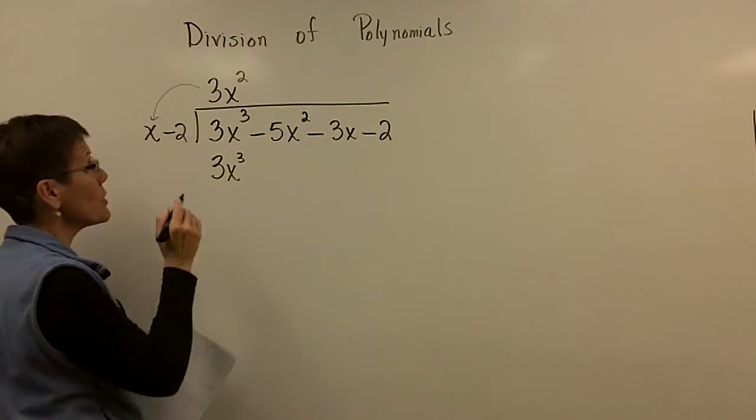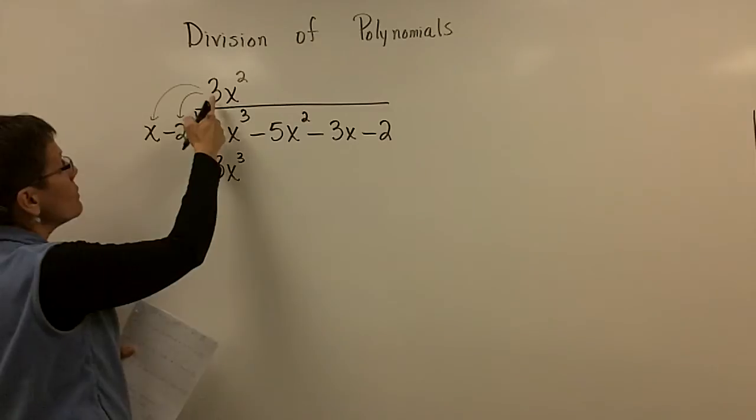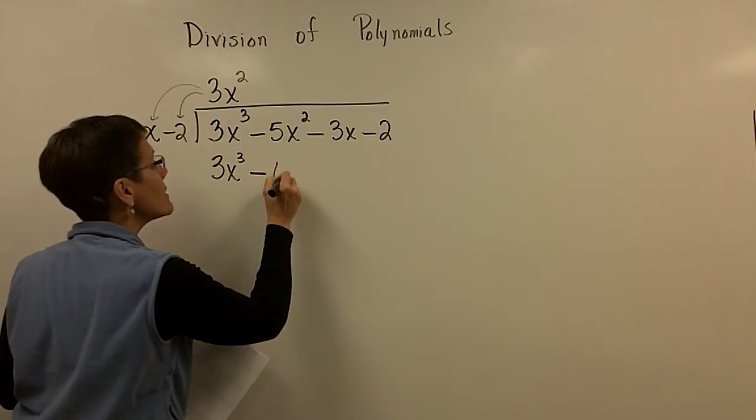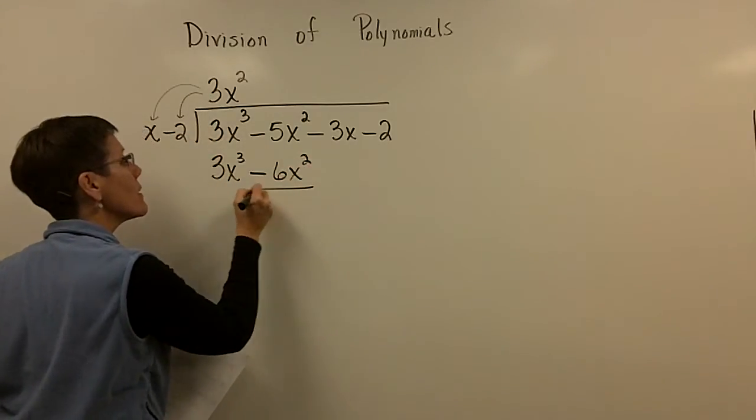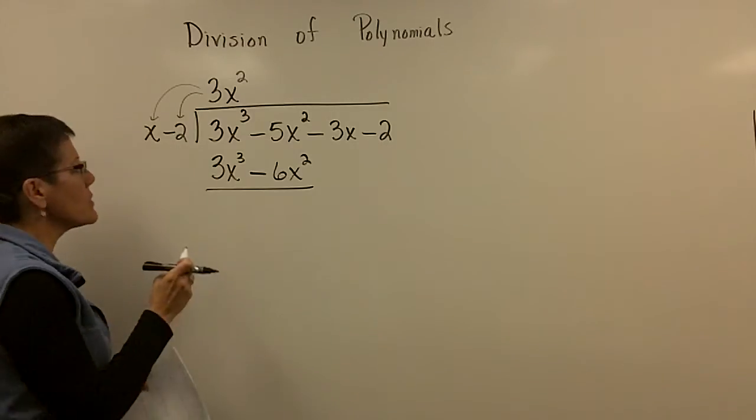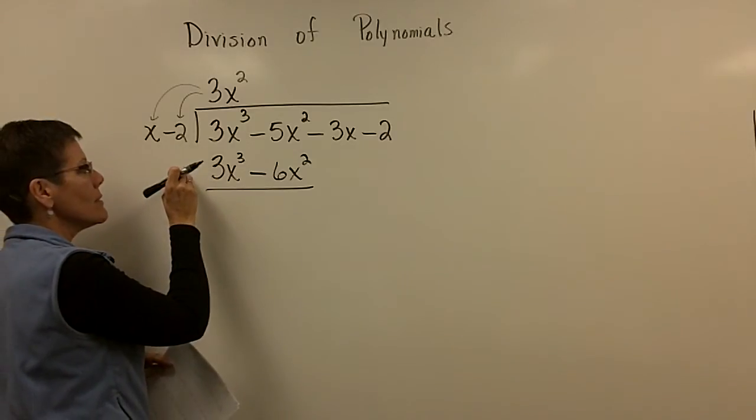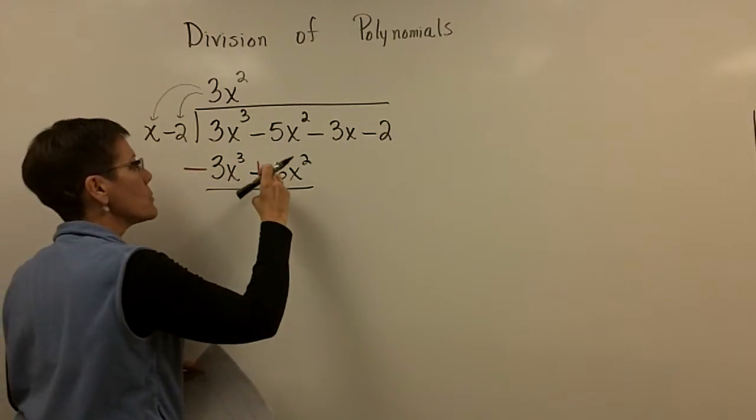But once you figure it out, that it's got to be multiplied by the other portions of the divisor here. So 3 times a minus 2 is a minus 6x squared. And then I got to subtract. Remember with arithmetic and long division, you subtract. And when you subtract in algebra, you add the opposite. So this becomes a negative and this becomes a positive.